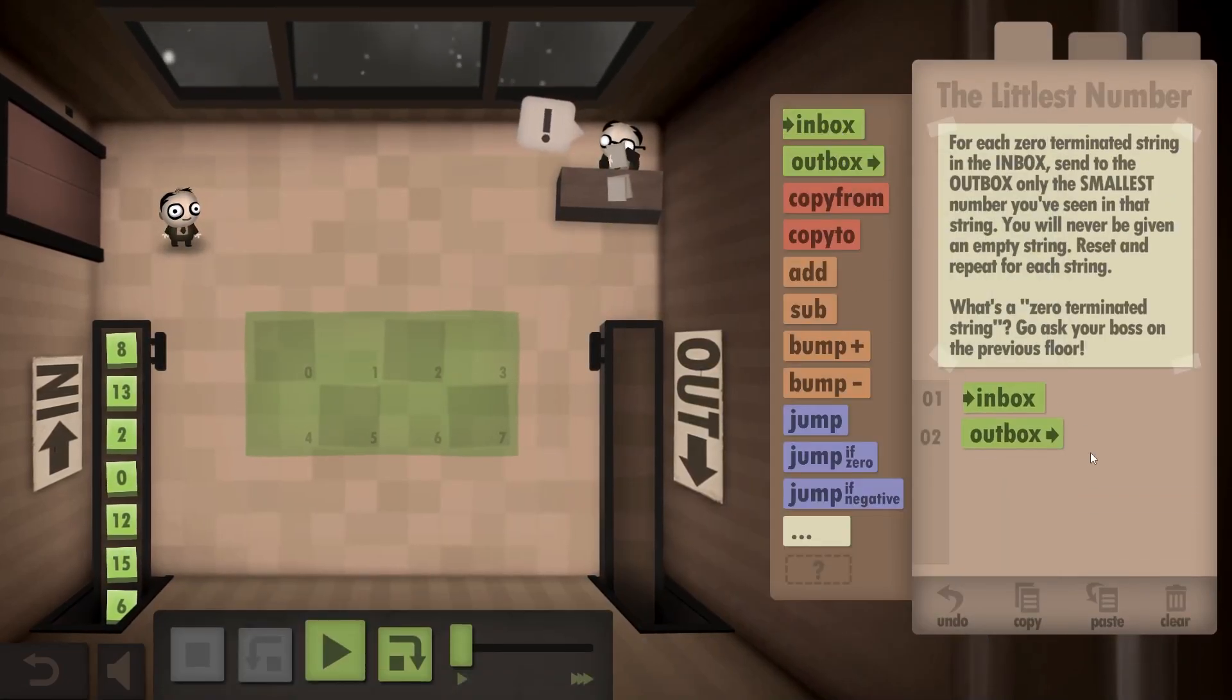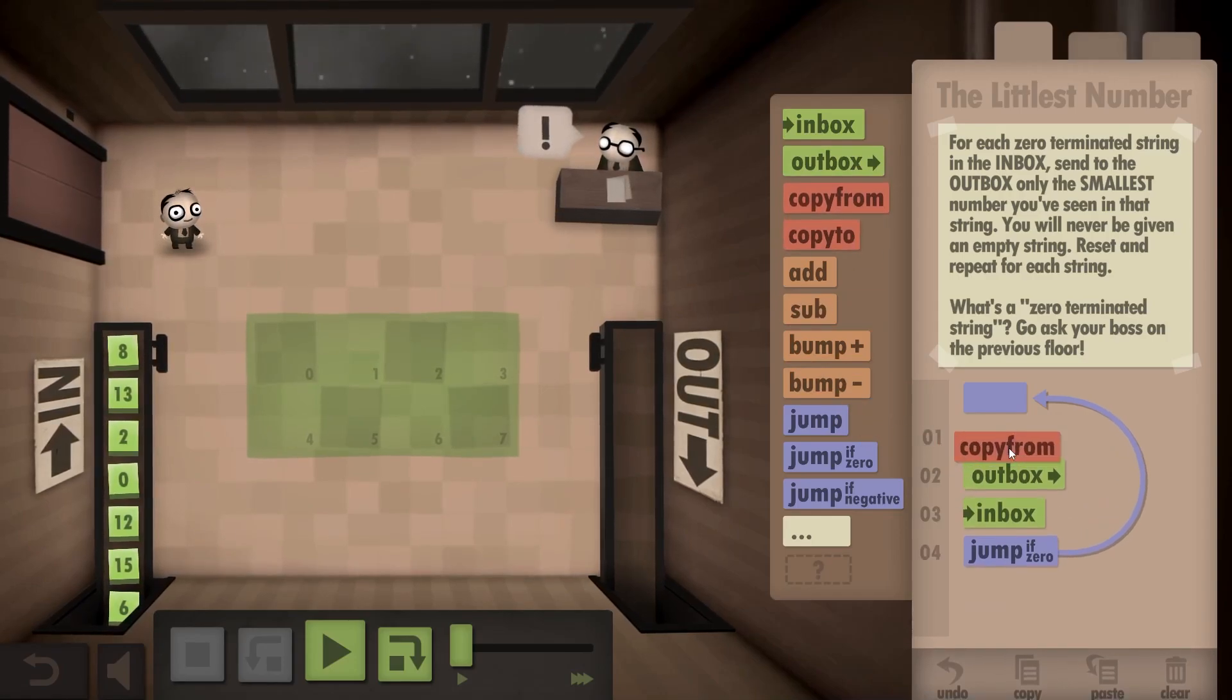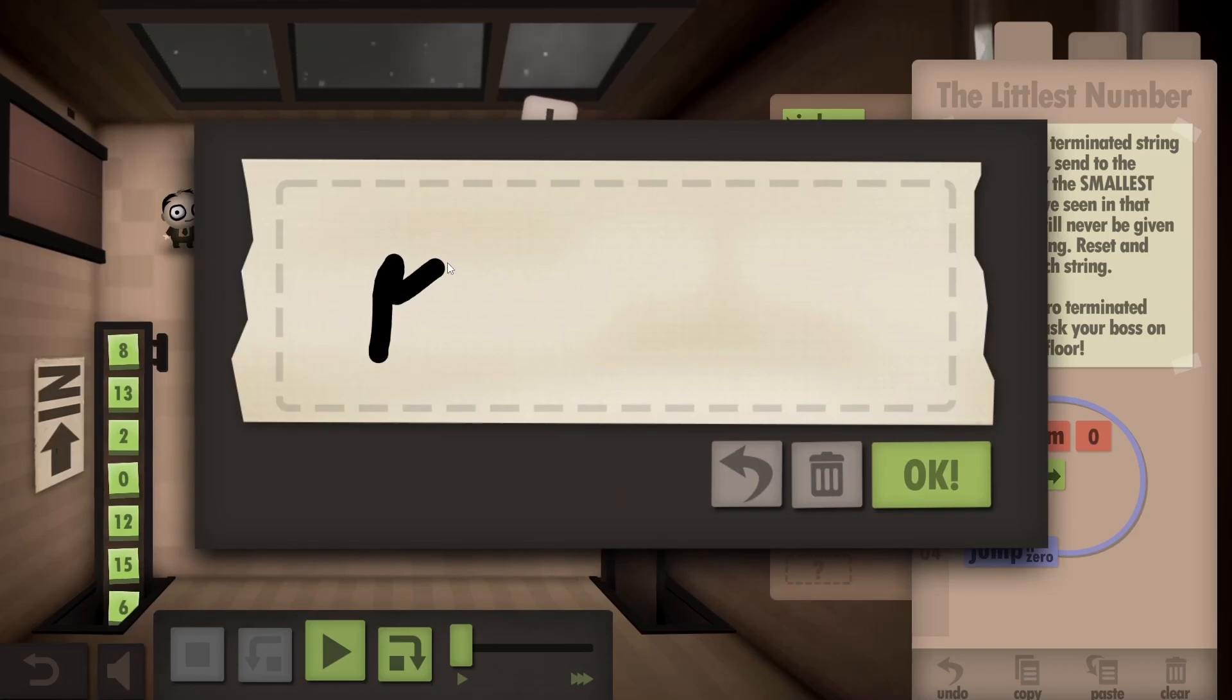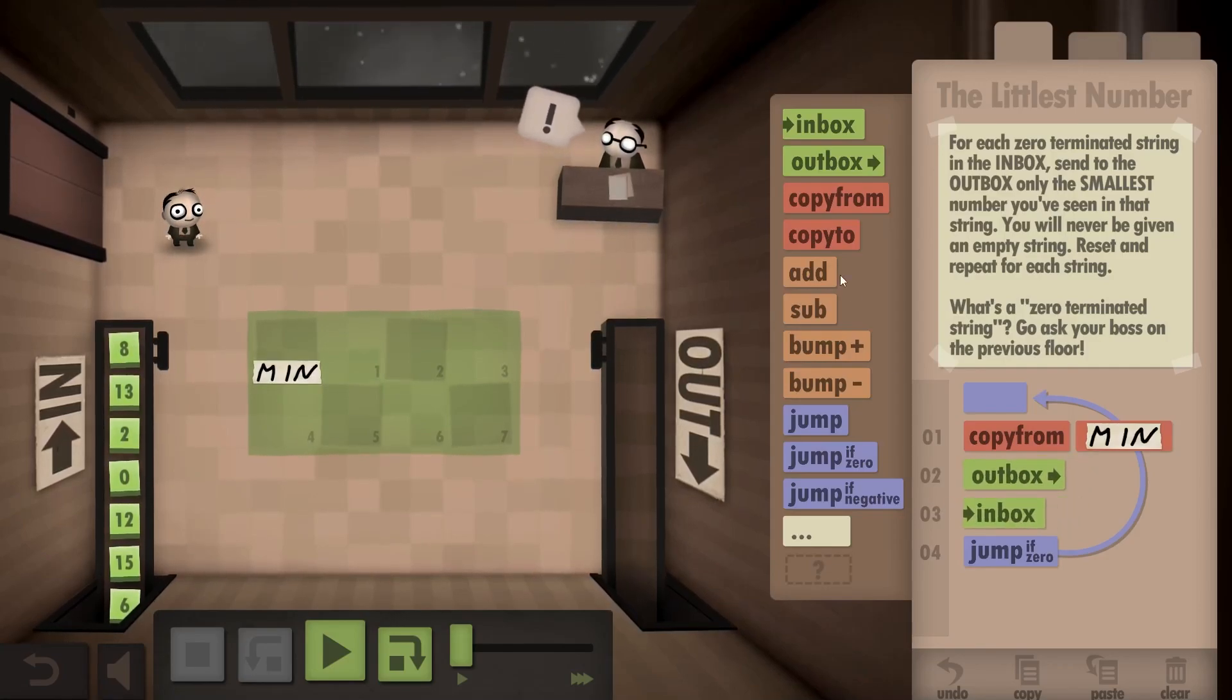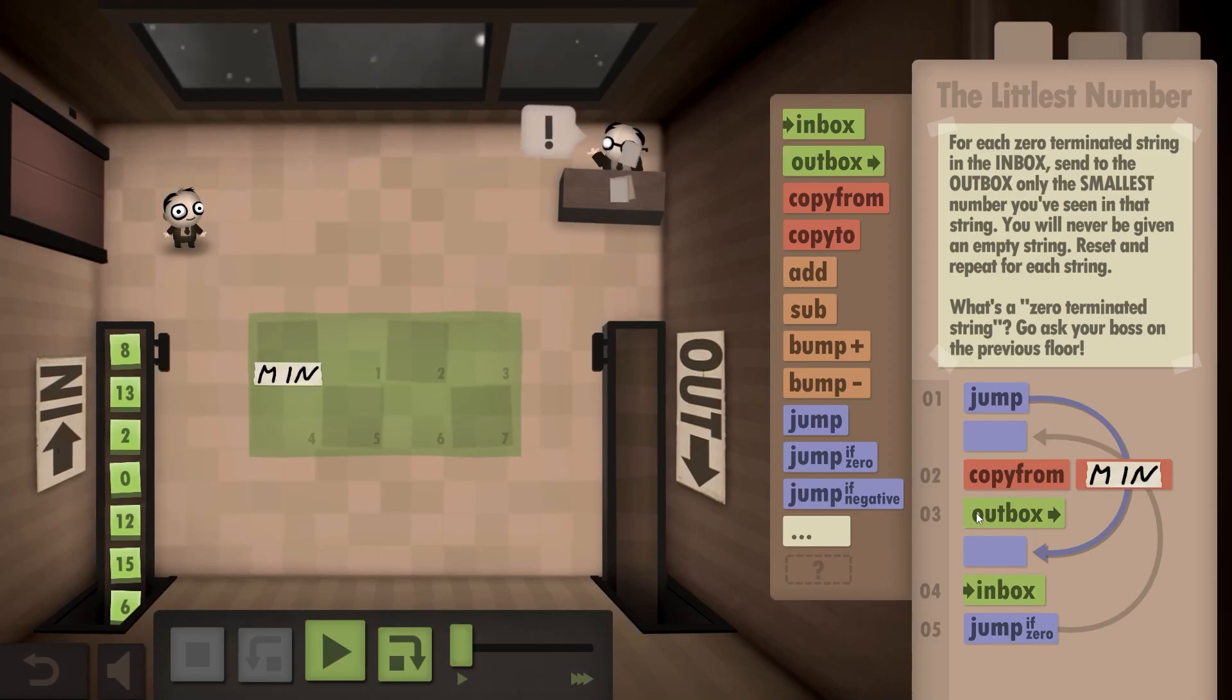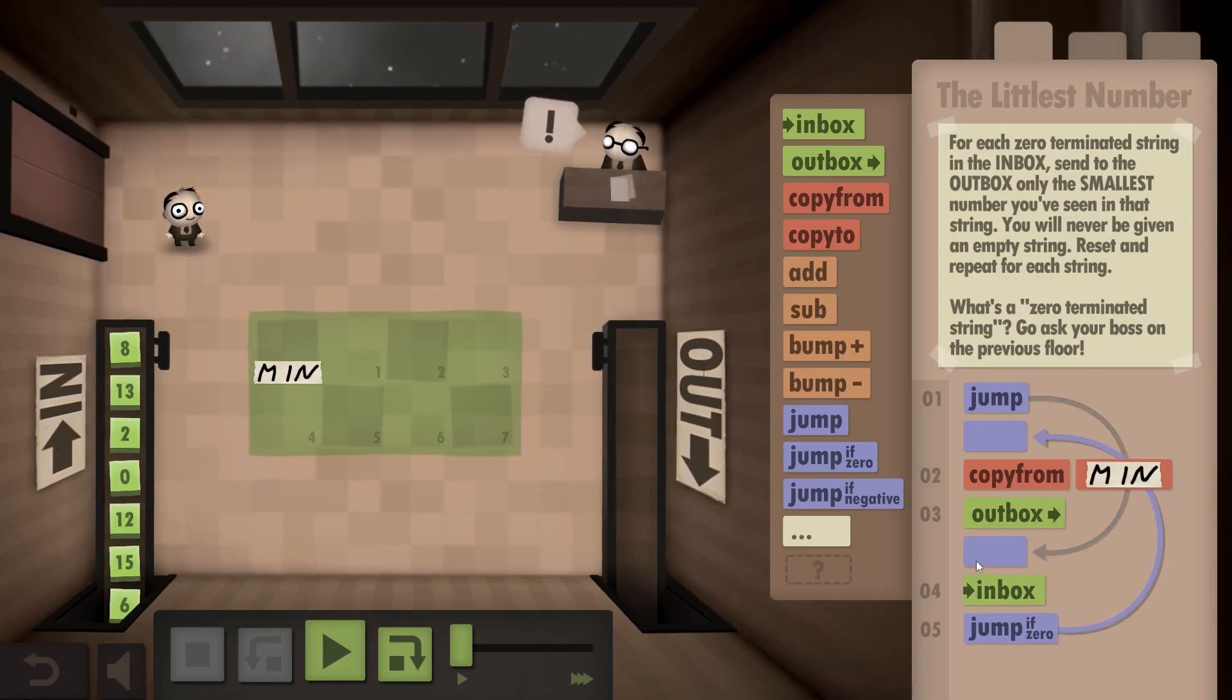So we're gonna be inboxing, we're gonna be outboxing at some point. Now if it's a zero, you're gonna outbox something. So here you're gonna do copy from whatever. Let's call this probably the minimum. Let's write it properly. Minimum, there you go. So you copy from minimum, you outbox that, and then you inbox. Once you start, you jump over the outbox. Why am I doing it like this? Because usually it saves a couple of steps. So do this jump only once. Then jump if zero back there. Cool.